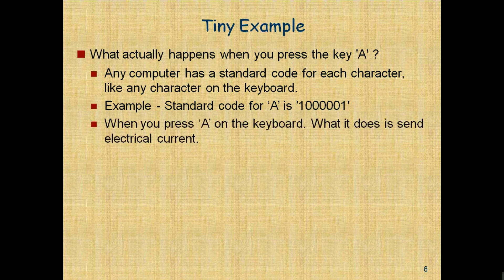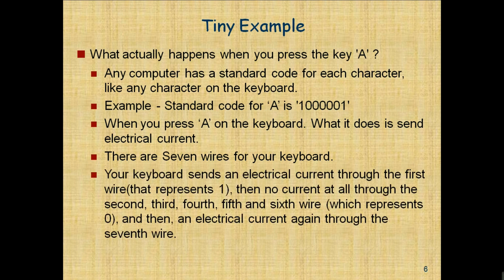When you press 'A' on the keyboard, it sends electrical current. There are seven wires for your keyboard. Your keyboard sends electrical current through the first wire (representing 1), then no current through the second, third, fourth, fifth, and sixth wires (representing 0), and then electrical current again through the seventh wire. You've just sent the code of 'A' to your computer.